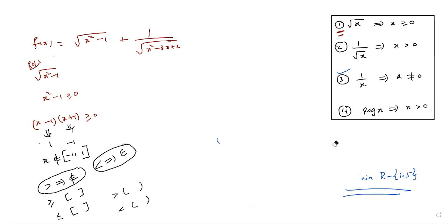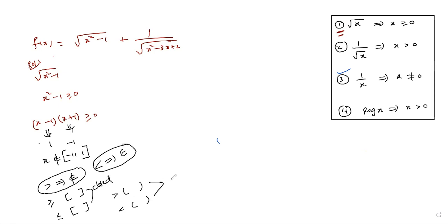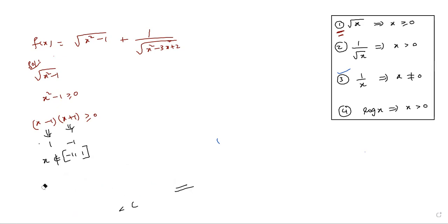Remember these key points: whenever you find greater sign, it does not belong; whenever you find less than sign, it belongs. Greater than or equal to or less than or equal to means closed interval — closed bracket on both sides. If it is strictly greater or strictly less than, use open interval — normal bracket. Intervals should be written in increasing order: minus 1 to 1 is the correct order.